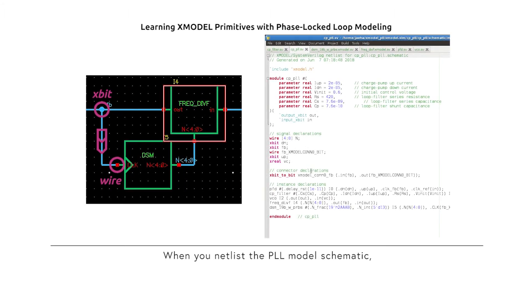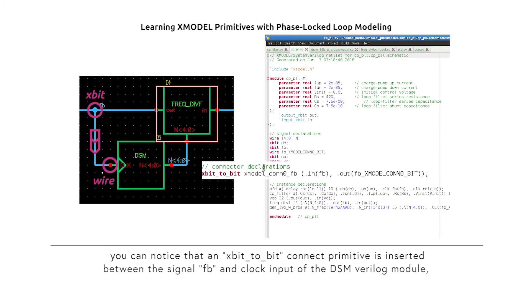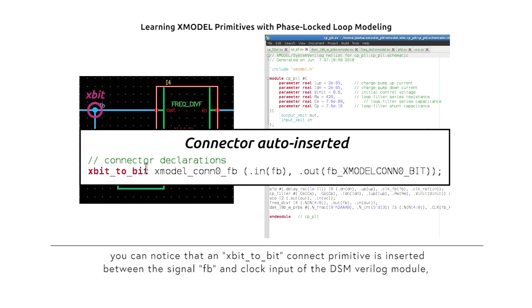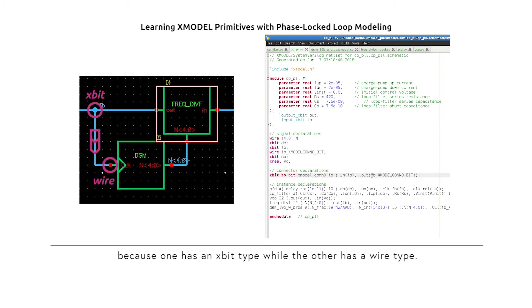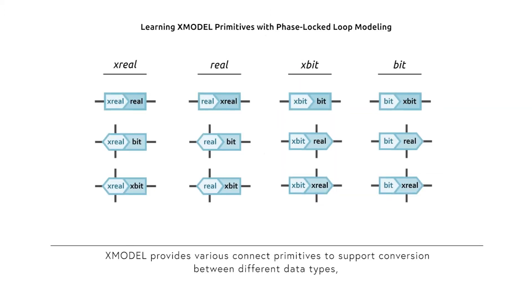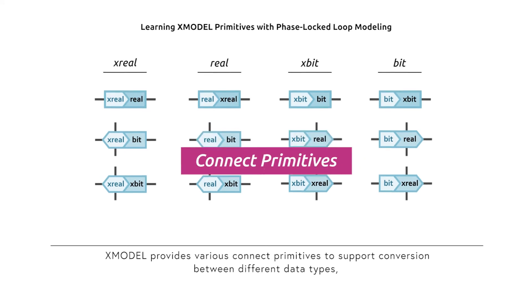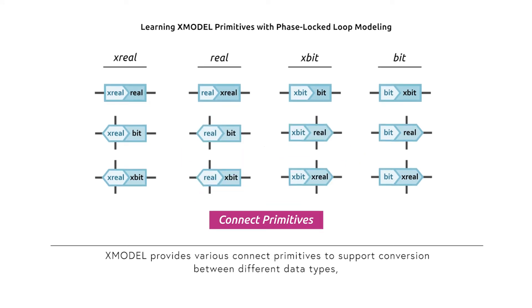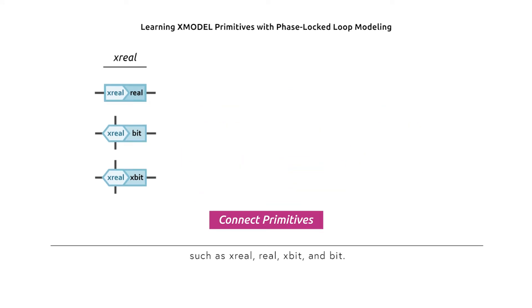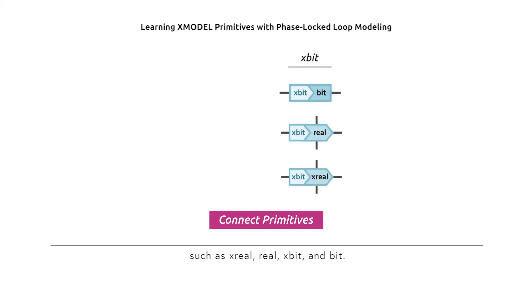When you netlist the PLL model schematic, you can notice that an X-bit to bit connect primitive is inserted between the signal FB and the clock input of the DSM Verilog module, because one has an X-bit type while the other has a wire type. X-Model provides various connect primitives to support conversion between different data types, such as X-Real, Real, X-Bit, and Bit.